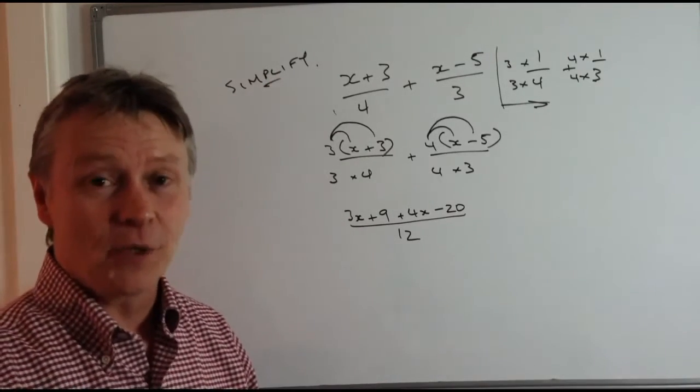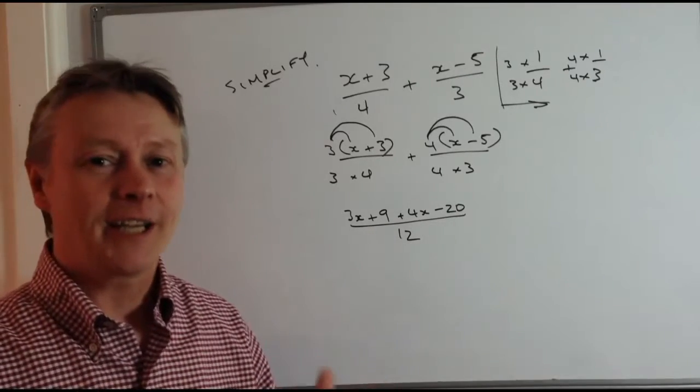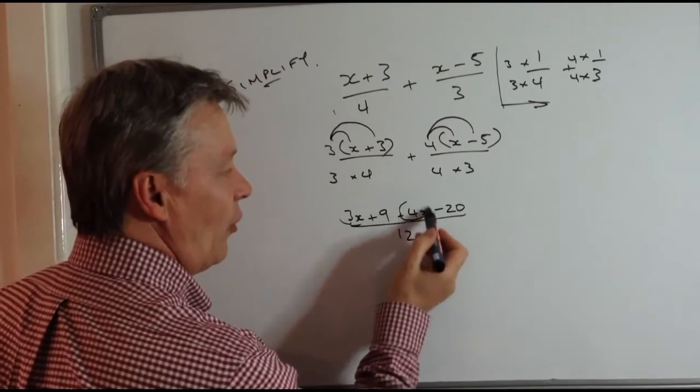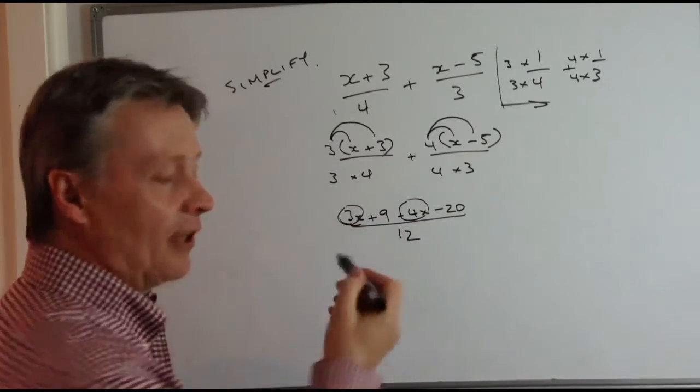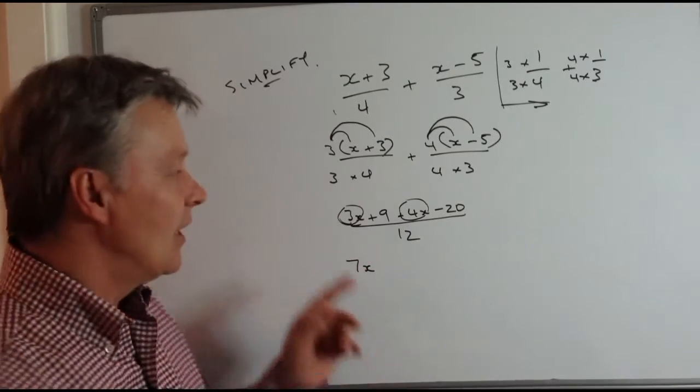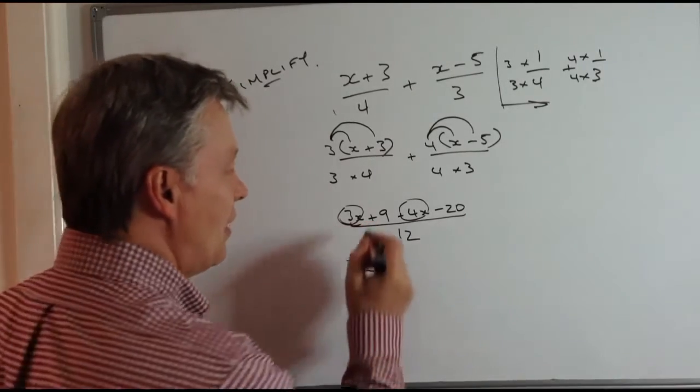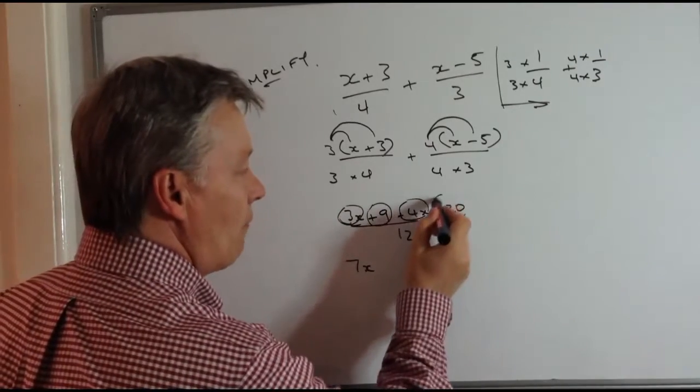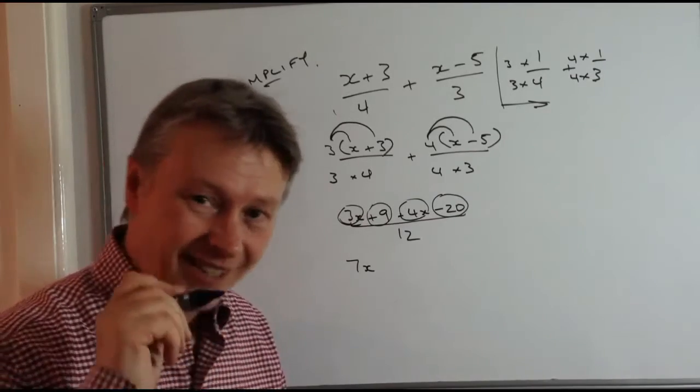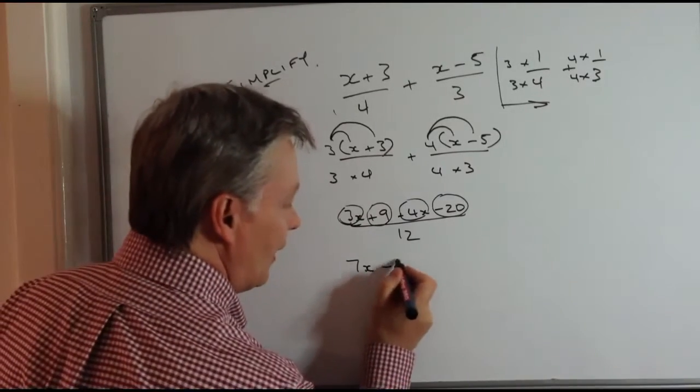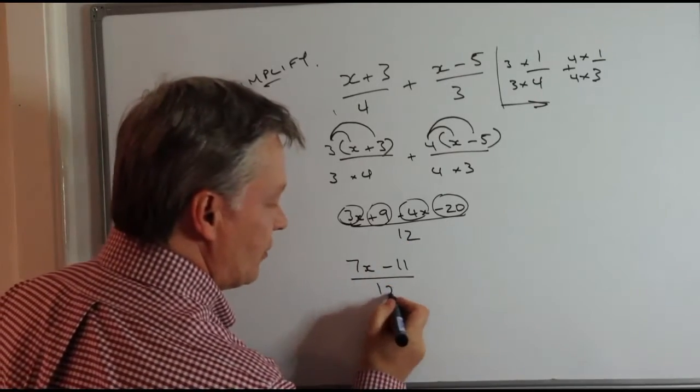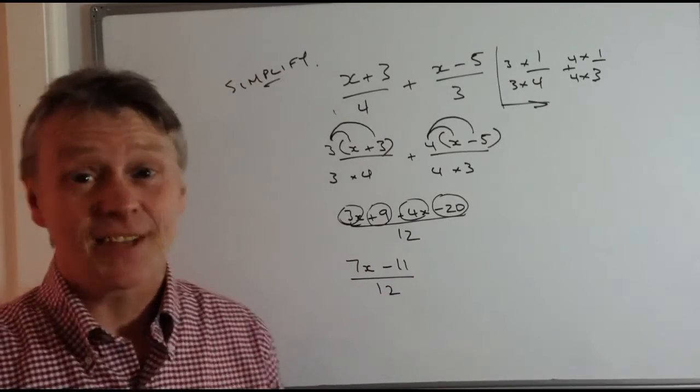The way we do that is we gather up like terms. So I've got 3x here, and I've got 4x here. So 3x plus 4x is going to be 7x. Then I've got plus 9, and I've got minus 20. So plus 9 minus 20 gives me a negative 11. And that's divided by 12. That's the answer.